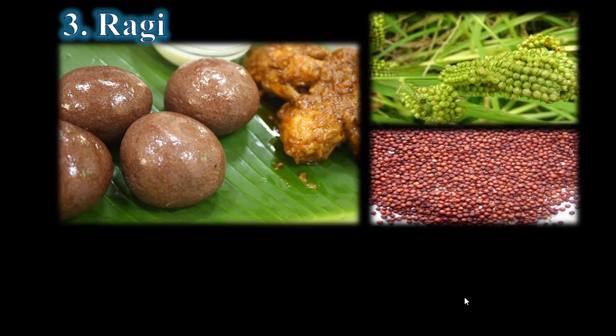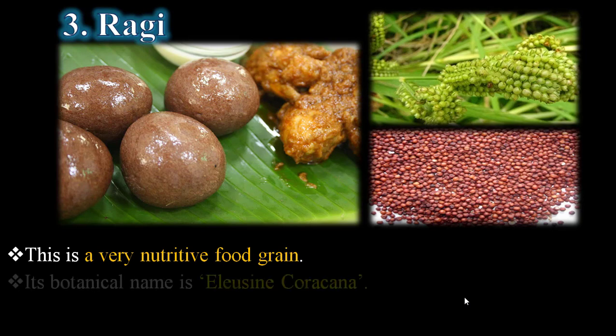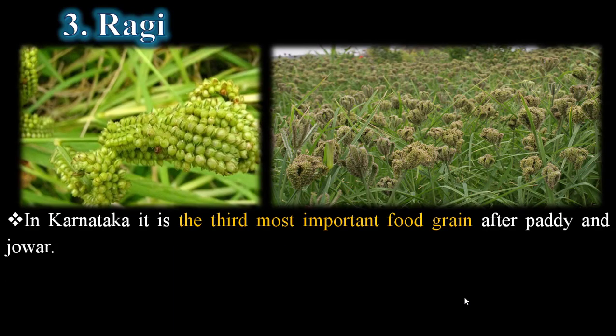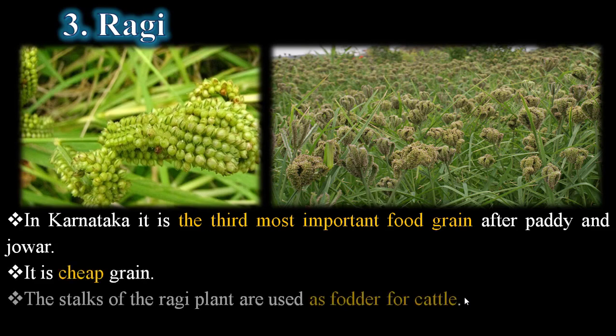The third important major crop of Karnataka is ragi. Ragi is a very nutritious food grain. Its botanical name is Eleusine coracana. Ragi balls, porridge, sprouted flour malt, and dosa are made from ragi. In Karnataka it is the third most important food grain after paddy and jowar.